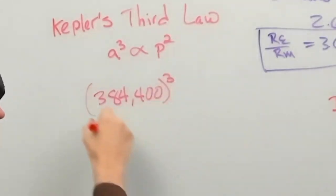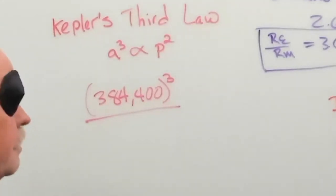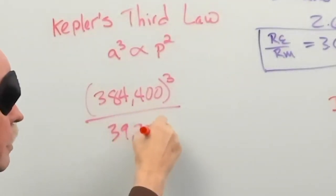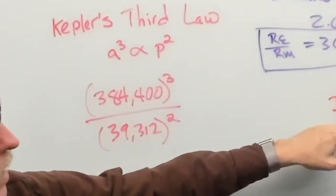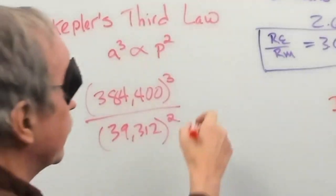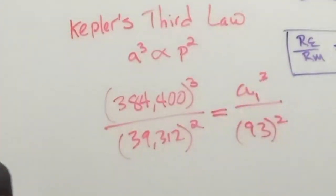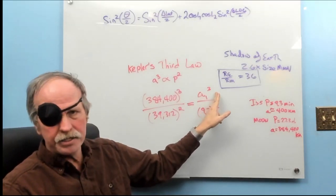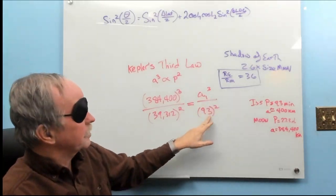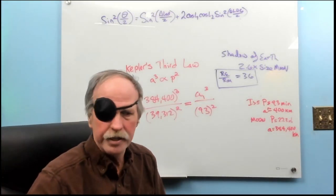So, if we take the radius of the orbit cubed, and then we take the period of the orbit in minutes, which is 39,312 minutes, and square that, that would equal the period of the International Space Station, which is 93 minutes, times the distance of the ISS cubed. Now, we know these three values. Let's see if we can find the radius of the orbit of the ISS. And remember, that's to the center of the earth. So, we'll move this 93 up to here.